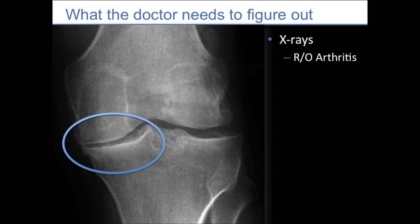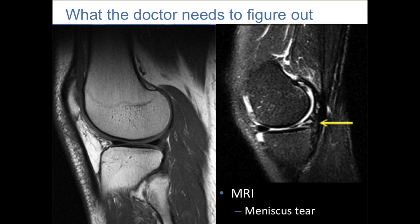The doctor will do some imaging to figure out what's going on. Often we'll get X-rays to rule out arthritis — on the medial side of the knee you can see a lack of joint space and some bone spurs, classic findings of an arthritic knee. The doctor is trying to figure out if the pain is from arthritis or from a meniscus tear. The doctor will also often get an MRI. A normal meniscus looks like a black triangle; on the right side of the screen you can see that black triangle has a white tear cutting right through it — that's a patient with a large tear of their meniscus.